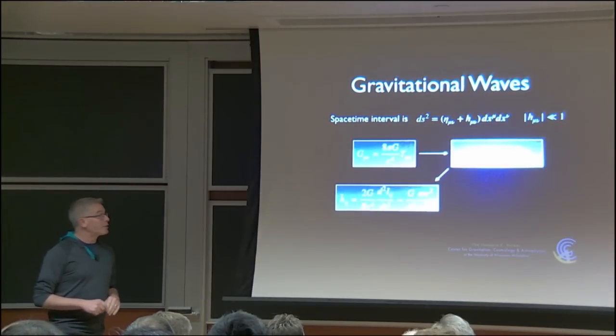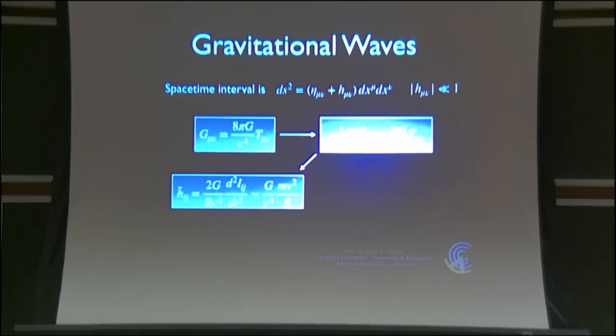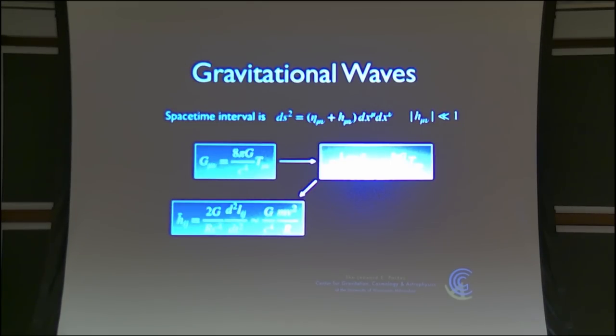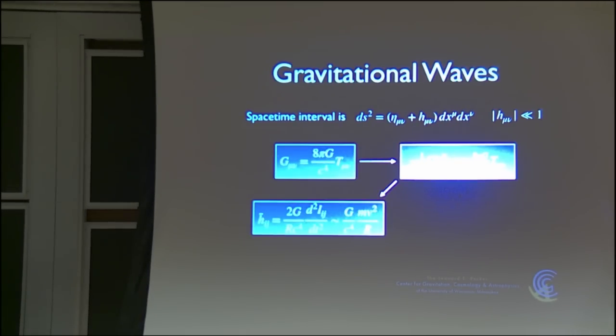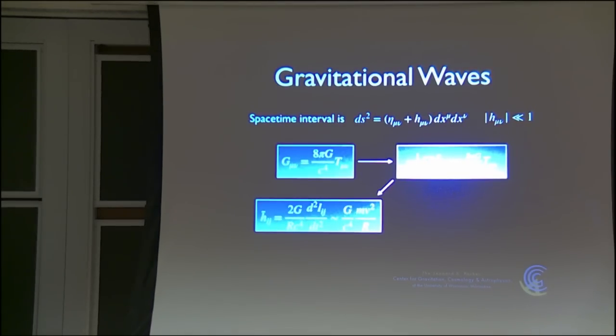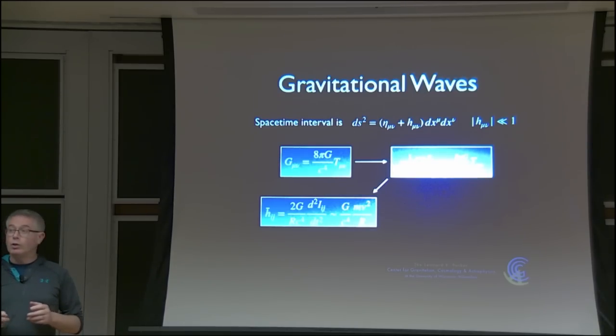So, a reminder to everyone about gravitational waves, this is our space-time interval as usual. We've got our Minkowski metric sitting there with a perturbation that's small. We plug that into Einstein's equations, linearize, do a few tricks with coordinates, and we end up with a wave equation where this is the standard Minkowski wave equation for the metric perturbation. Forget about the bar on this, it's not too important, with the stress energy tensor on the right-hand side.